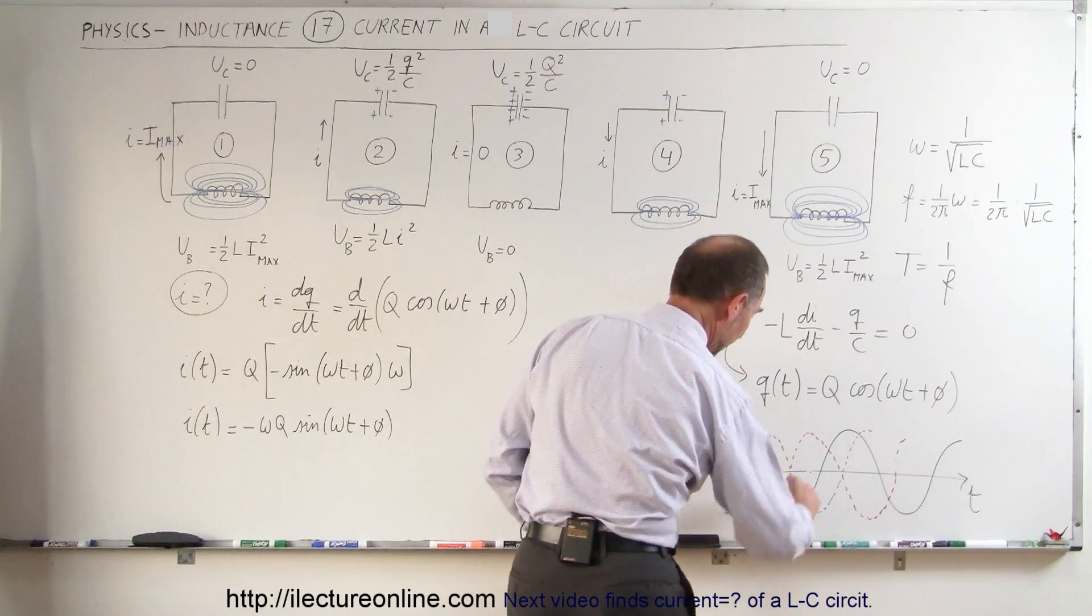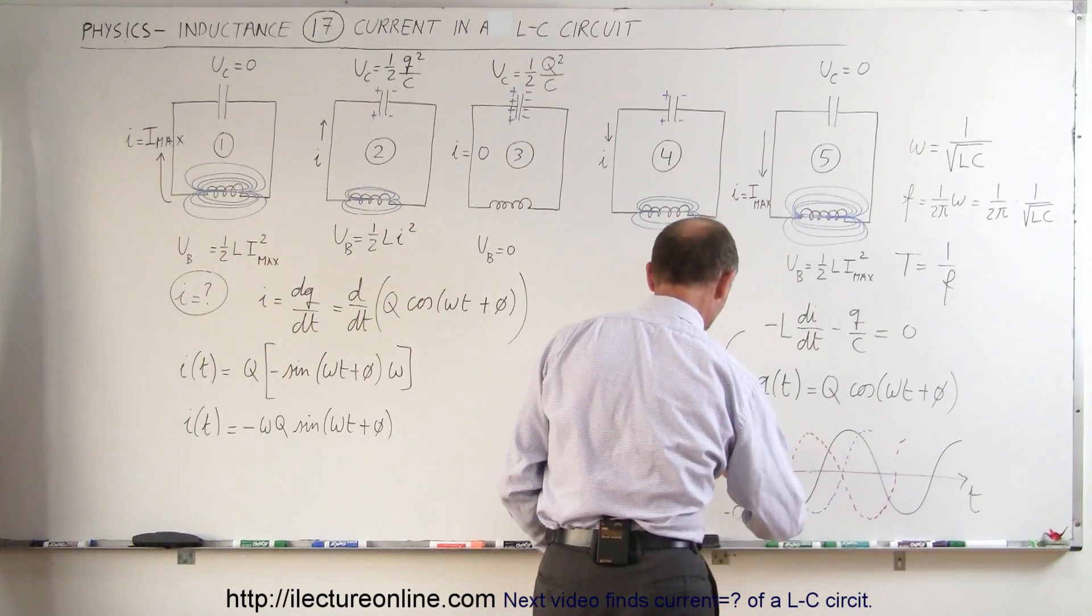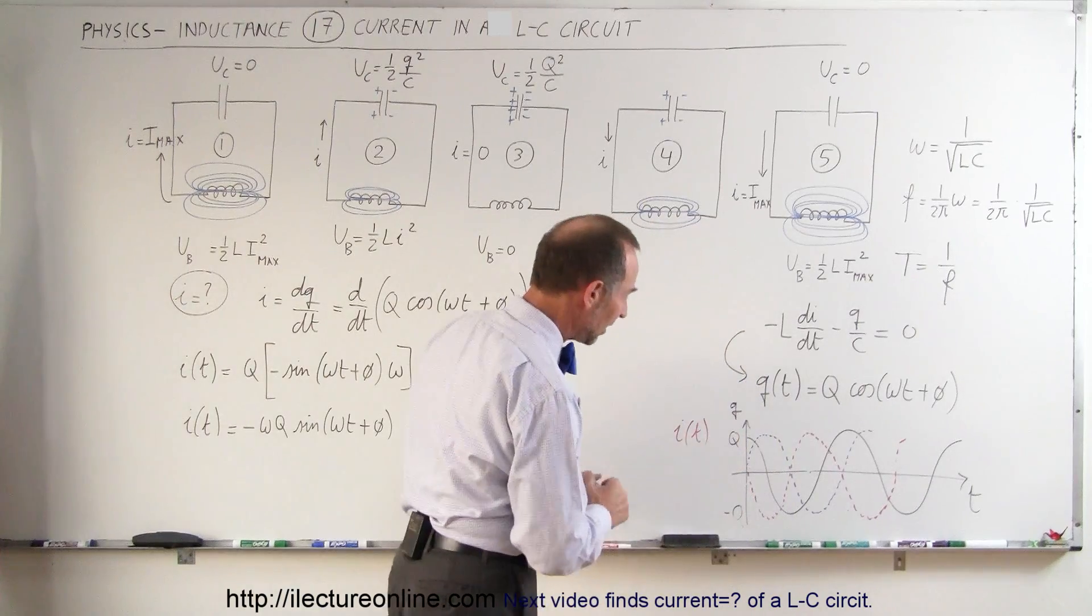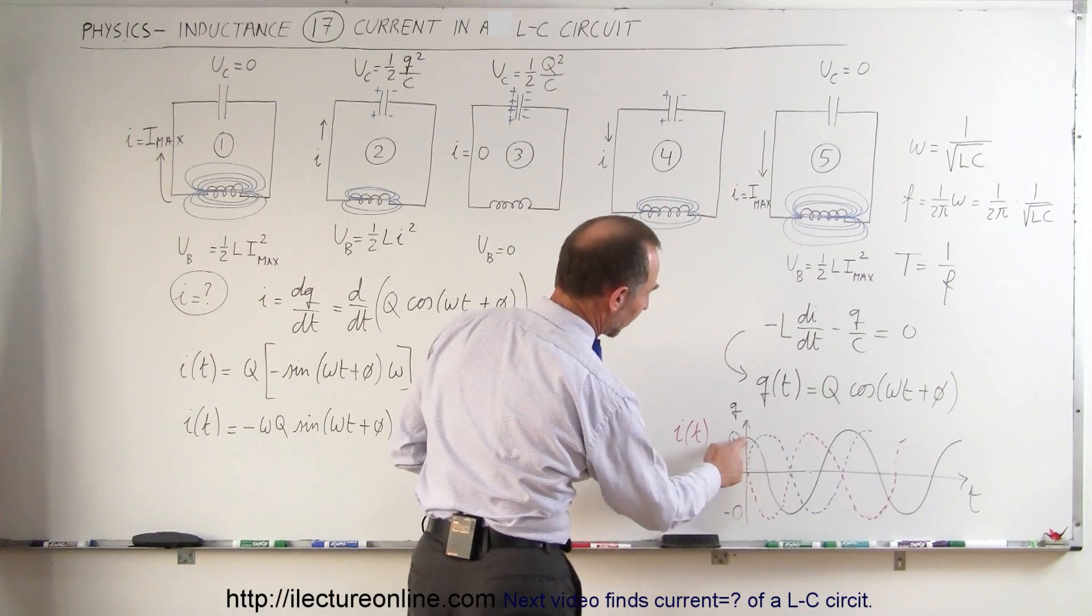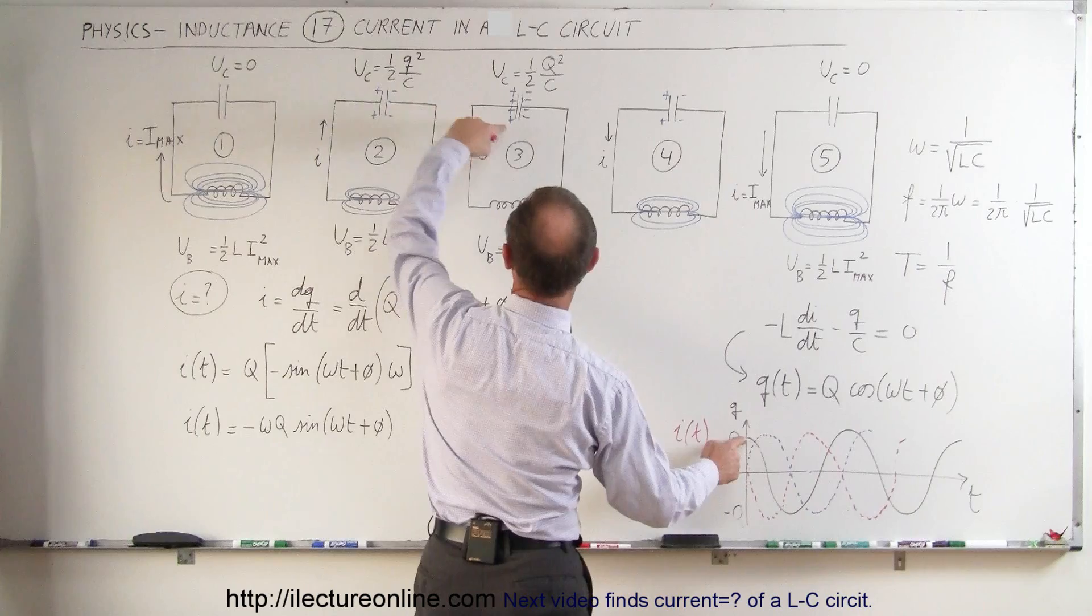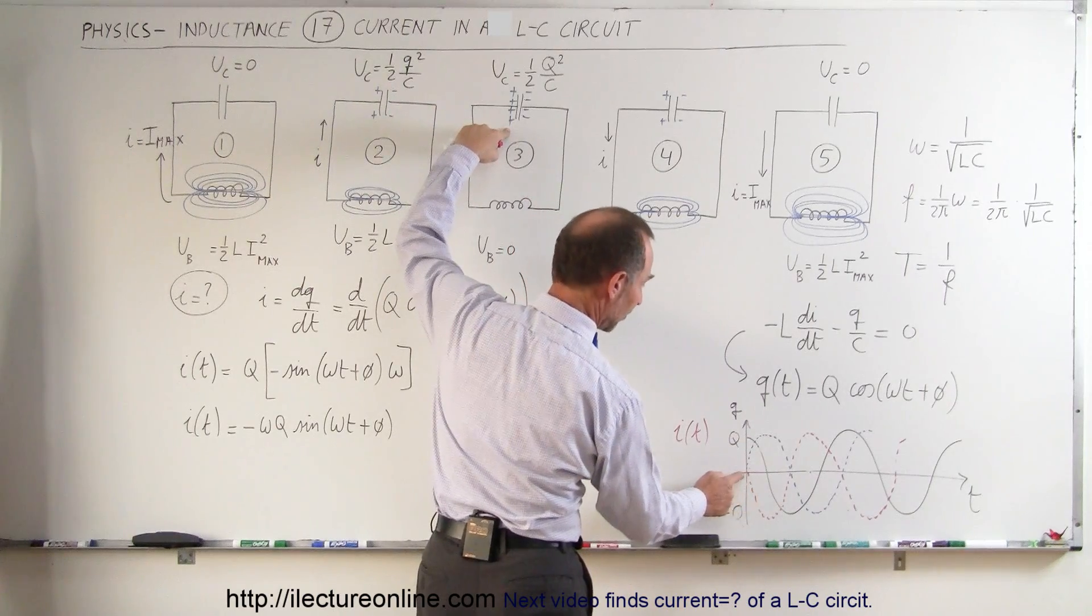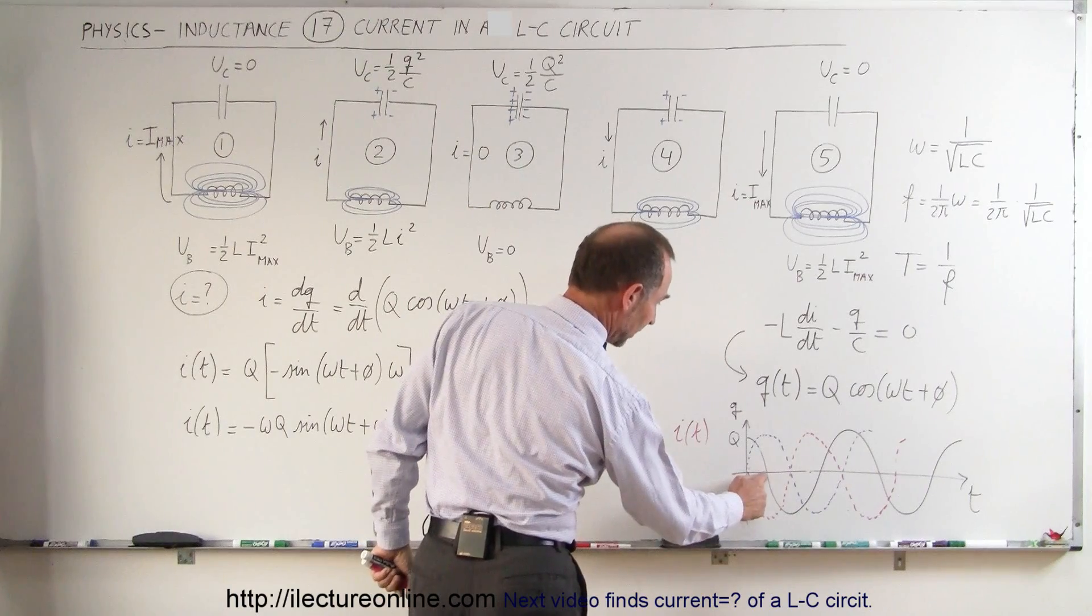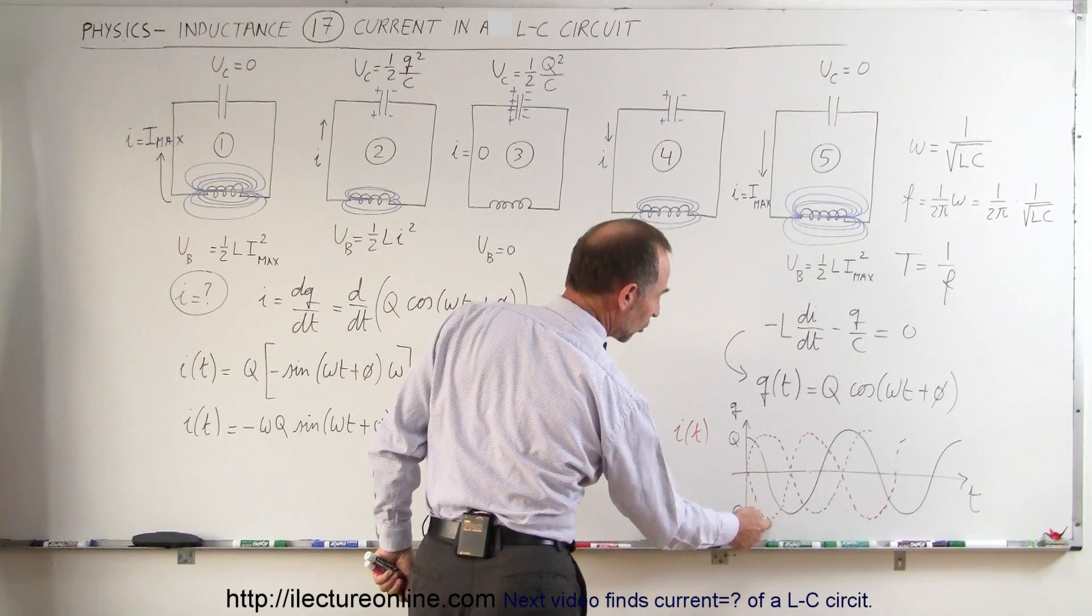And so the red line represents the current. So I as a function of time is the red line. And you can see that when the capacitor is fully charged, right here, current is equal to zero. When the capacitor has zero charge on it, right there, then we have a maximum current.